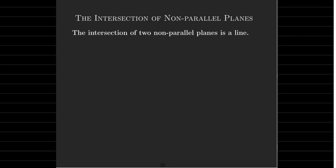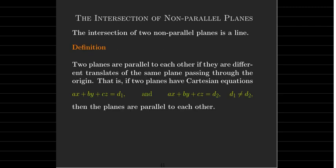An interesting fact: the intersection of two non-parallel planes is going to be a line. So how can we tell if two planes are parallel? If we have their Cartesian equations and they are parallel, the only thing that differs is the right-hand side — we can write them as AX plus BY plus CZ equals D1 and AX plus BY plus CZ equals D2, with the same A, B, C but D1 different from D2.